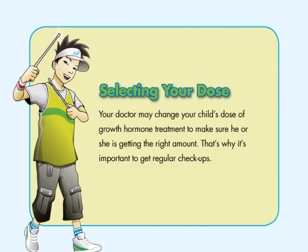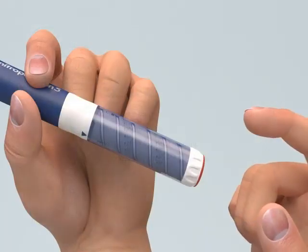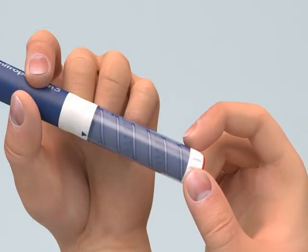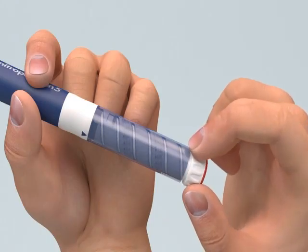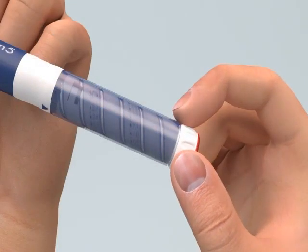To set your dose, turn the dose knob until you see the number of milligrams for your dose in the middle of the dose window lined up with the arrow. You will hear a click for each dose increment you dial, but you shouldn't rely on the clicks to measure the correct dose.